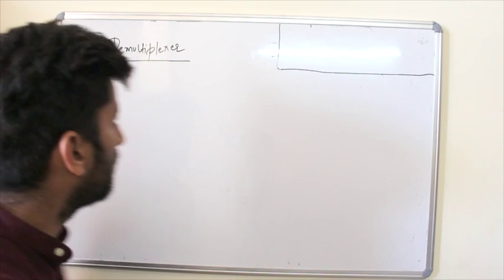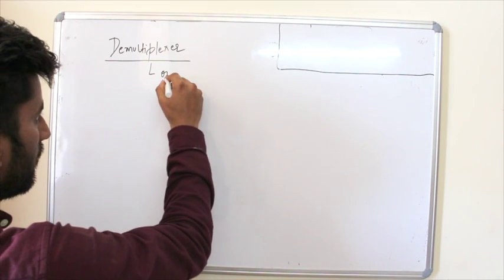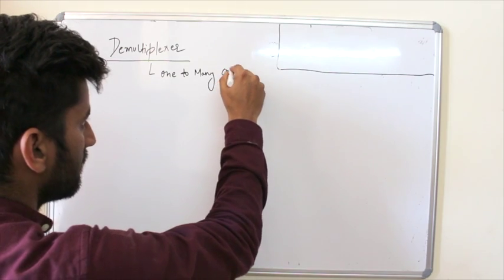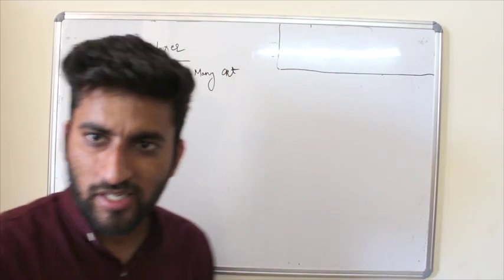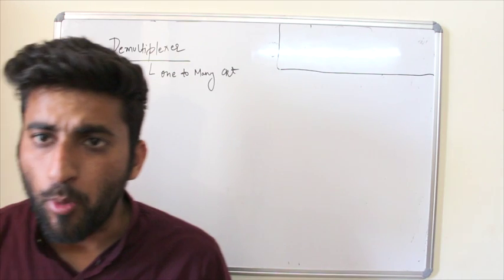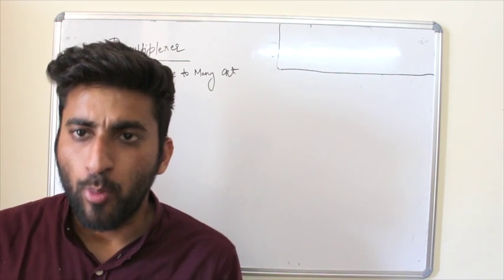Okay, so in demultiplexer, this is actually one to many circuit, means we have single input. We have one input and we have many outputs.